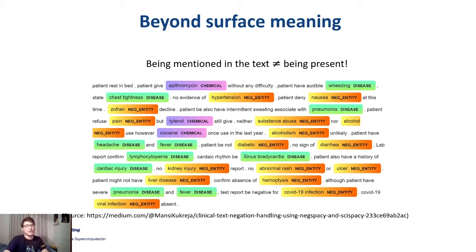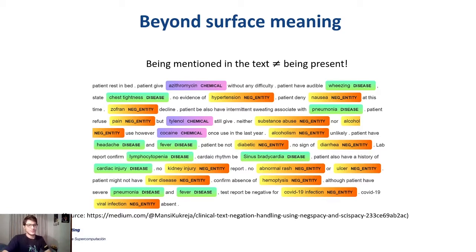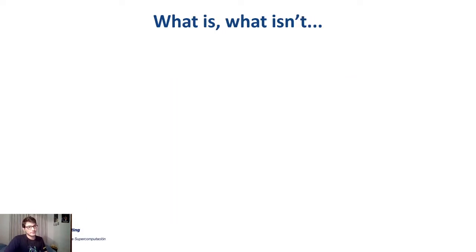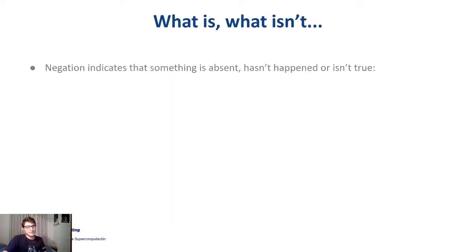Now I will focus on two different phenomena, sometimes called extra-propositional meaning, because it's meaning that is in the sentence but requires some processing to detect. The first one is negation. As you may know, negation indicates that something is absent, or that it hasn't happened, or just that it isn't true.